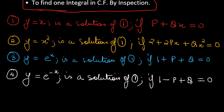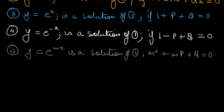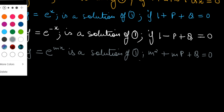Point five: if y = eᵐˣ is a solution of equation one, then you must have m² + mP + Q = 0.